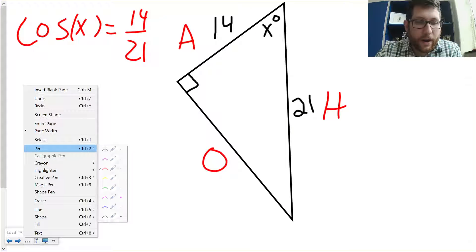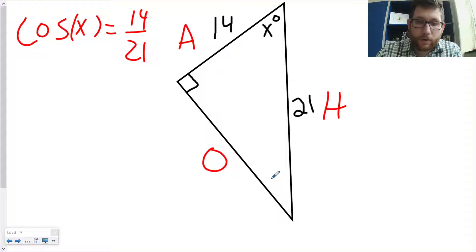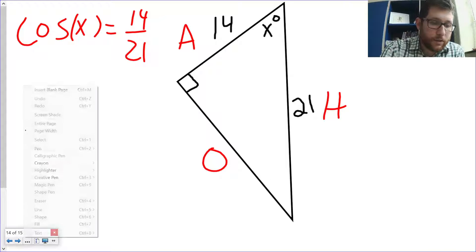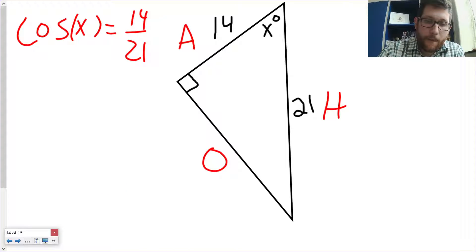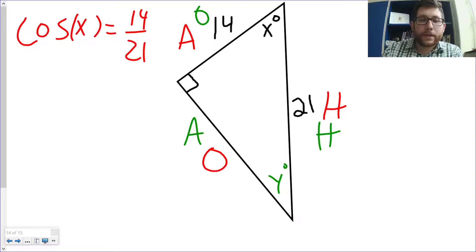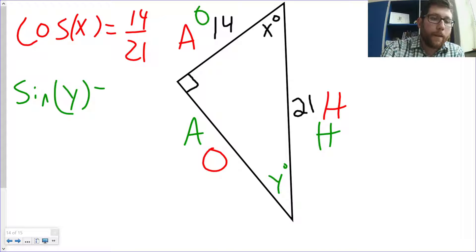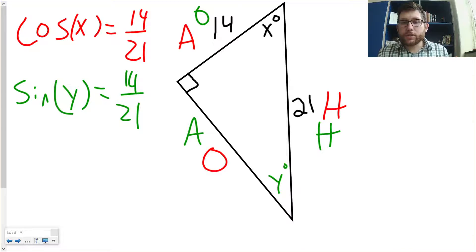What if we talked about the other angle? What if we talked about this angle right here? Actually, let me switch it this way. Talked about angle Y there. What would be the O and A sides? So, this is still H, right? This is now my O side. That's still my A side. Well, notice that if I take sine of Y, what do I get? I get 14 over 21. I actually find out that cosine of one angle in the triangle is the same as sine of the other angle in a right triangle, which is actually kind of interesting.